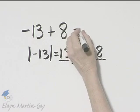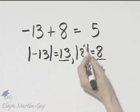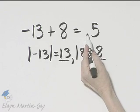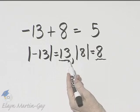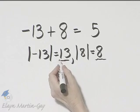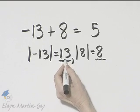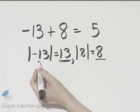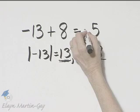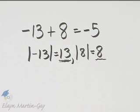13 minus 8 is 5, and we keep the sign of the number with the larger absolute value. This is the larger absolute value — it is originally negative 13, so my sum is negative 5.